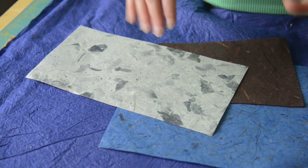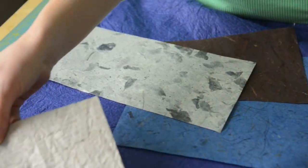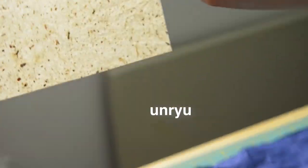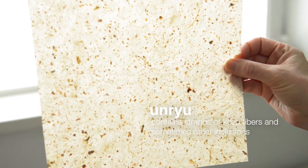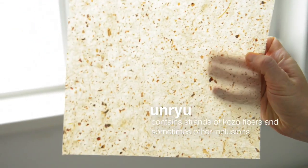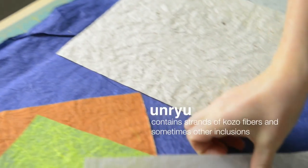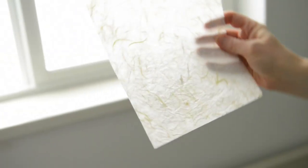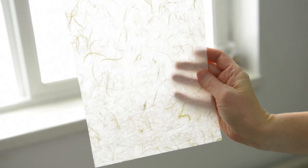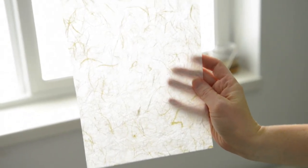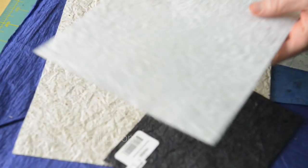I'm going to show you some paper from Thailand. This right here is natural Unruh. You can kind of see in the light there how thin it is. You can see my fingers behind it. This is also Unruh and this is actually double Unruh. This is two sheets of Unruh put together, but you see how you can see right through it.